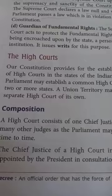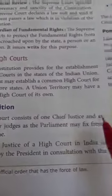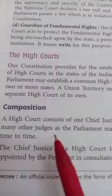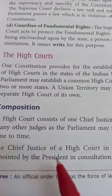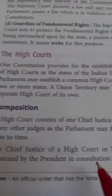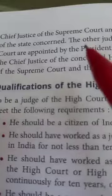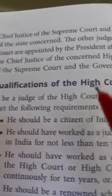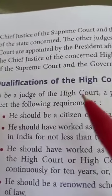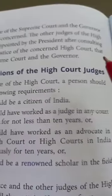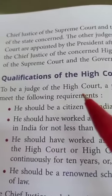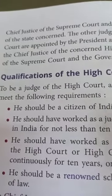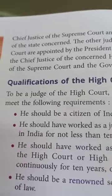Regarding composition, a High Court consists of a Chief Justice and as many other judges as Parliament may fix from time to time. The Chief Justice of a High Court is appointed by the President in consultation with the Chief Justice of the Supreme Court and the Governor of the state concerned. The other judges of the High Court are also appointed by the President after consulting the Chief Justice.